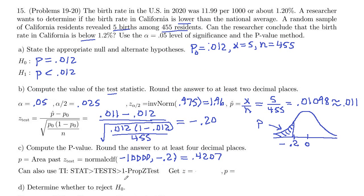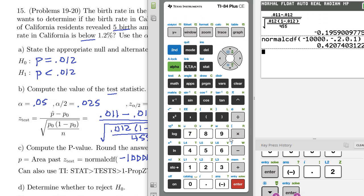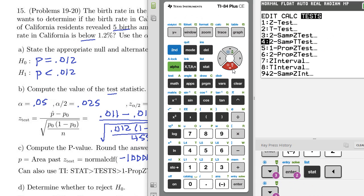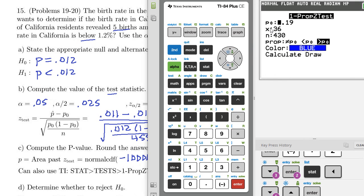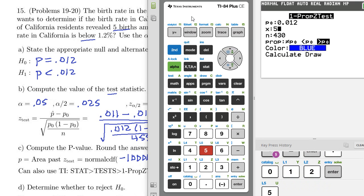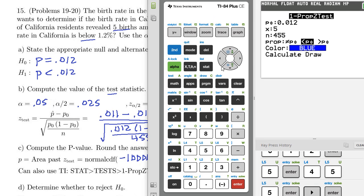Now we can also get this using one prop z-test. Let's do that real quick. So stat, test, and then we've got to scroll down to 5 is our one prop z-test. Enter, hypothesized proportion 0.012. Our successes were 5 out of sample of 455. And we are testing less than, so I highlight less than p₀. And let's go ahead and draw.